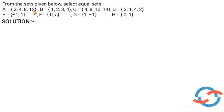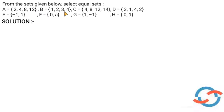So, A's first element is 2. Comparing with B: B has 2 as first element, 4 as second element, then 8. So, A is equal to B.